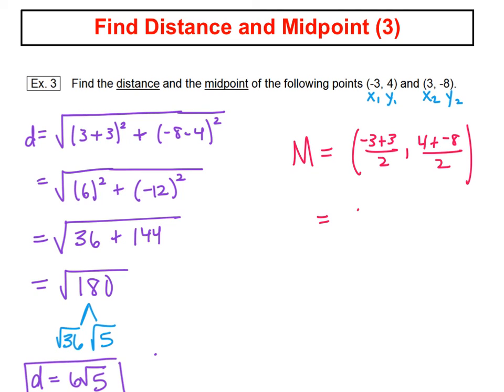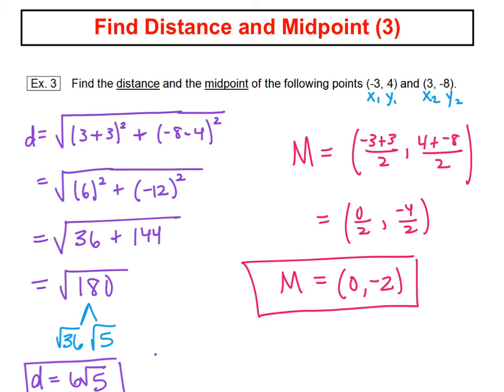Negative 3 plus 3 is 0, divided by 2. 4 plus negative 8 is negative 4, divided by 2. 0 divided by 2 is 0, negative 4 divided by 2 is negative 2. So our midpoint is (0, -2).